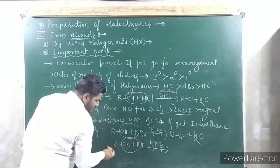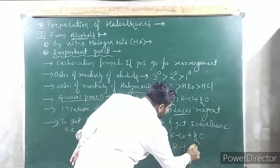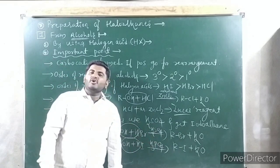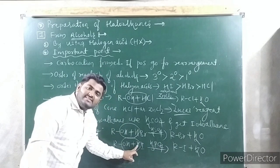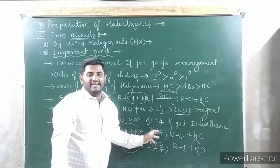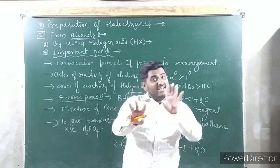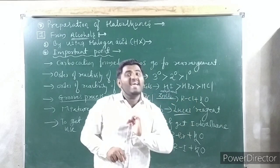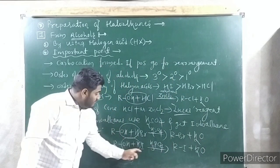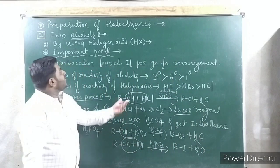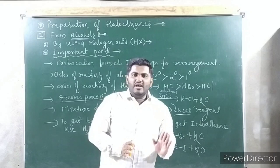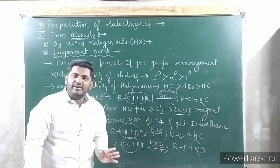If you just take alcohol + HX without any additional acid, you will still get the product — no doubt. But using H₂SO₄ with HBr or H₃PO₄ with HI gives a higher yield. So this is the first method. These are the important points you have to remember.